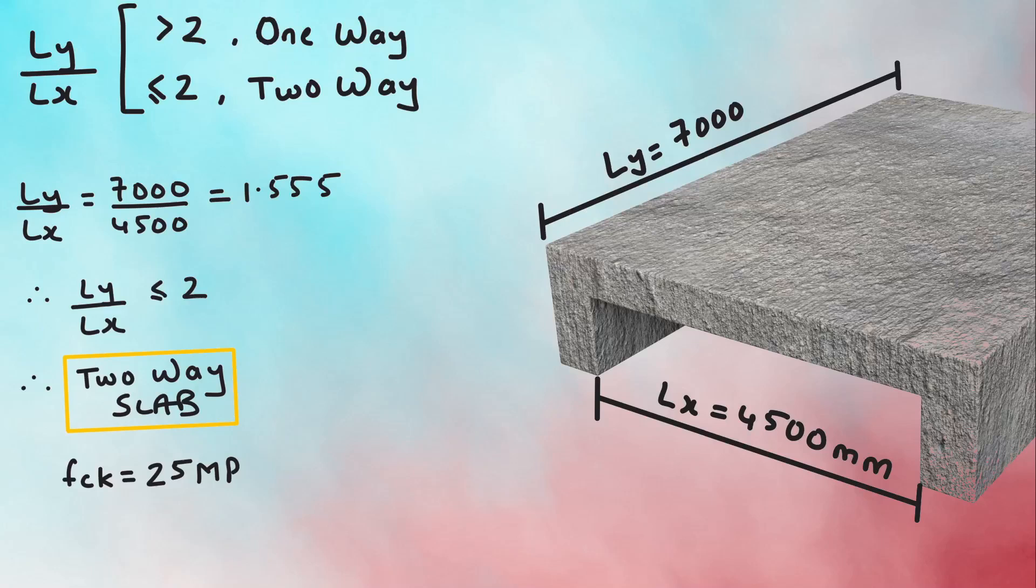Also, let's assume the grade of concrete is 25 and the grade of steel is 500.